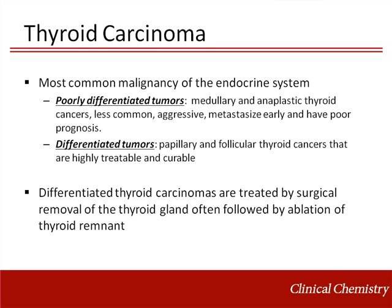Thyroid cancer is the most common malignant tumor of the endocrine system. The National Cancer Institute estimated that in 2010, 45,000 new cases of thyroid cancer were diagnosed in the United States. Thyroid cancer could be divided into poorly differentiated and differentiated thyroid carcinoma. The poorly differentiated medullary and anaplastic thyroid cancers account for approximately 3% of thyroid cancer cases and tend to be very aggressive and usually have a poor prognosis.